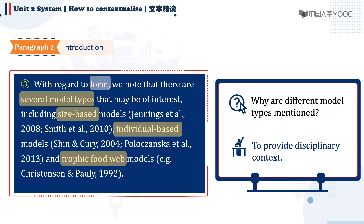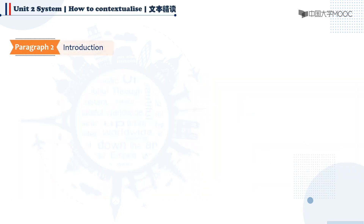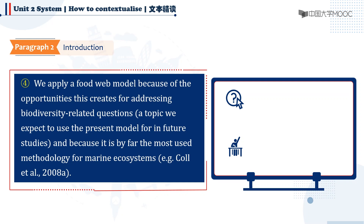Among these different model types, which one does this paper choose and why? In this sentence, the authors wrote: 'We apply a food web model because of the opportunities this creates for addressing biodiversity-related questions, a topic we expect to use the present model for in future studies, and because it is by far the most used methodology for marine ecosystems.' Like sentence 3, this one also provides the disciplinary context in which the authors specify the particular model type used, and the reasons behind it.